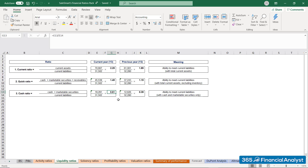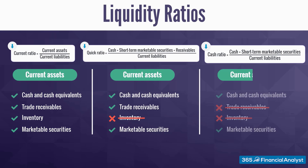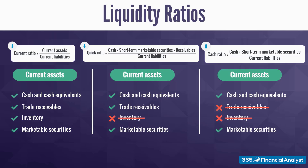Before moving on, let's sum up the key points. Although all three ratios measure a firm's ability to meet current liabilities, they should be considered collectively since they represent slightly different things. The major distinction is how they treat current assets: unlike the current ratio, the quick ratio excludes inventory, and the cash ratio further excludes trade and other receivables. When estimating these metrics, we need to consider many factors, such as the historical trend of a given ratio as well as industry averages.